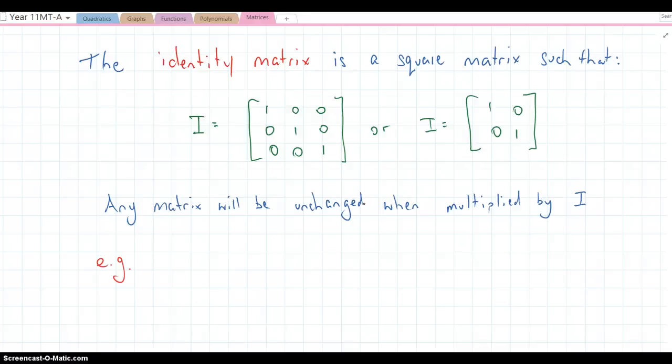Just like the 0 matrix is full of 0's, this is the 1 matrix. So you can multiply any matrix by the identity matrix and it will remain the same value. So we'll have a look at an example of that.